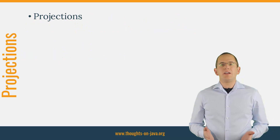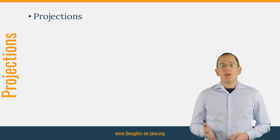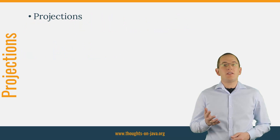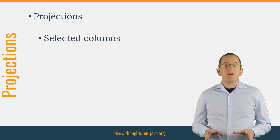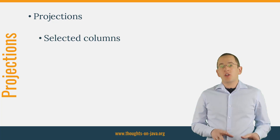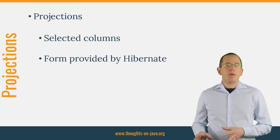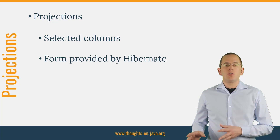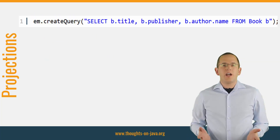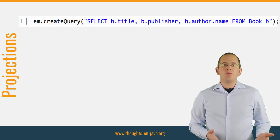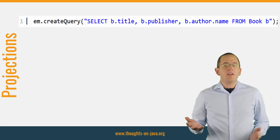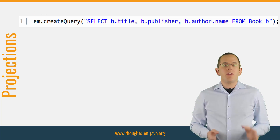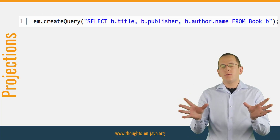Now let's quickly explain what a projection is. The projection describes which columns you select from your database and in which form Hibernate provides them to you. In other words, if you're writing a JPQL query, like you see here, it's everything between the SELECT and the FROM keywords.